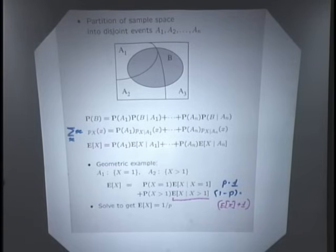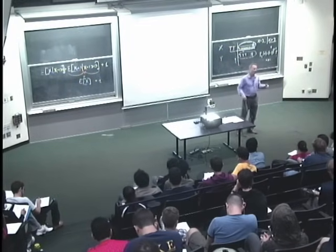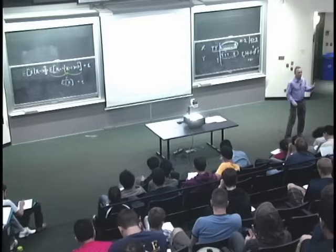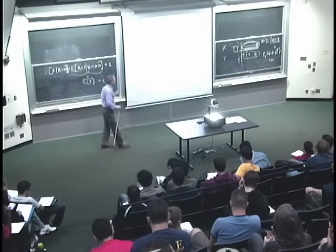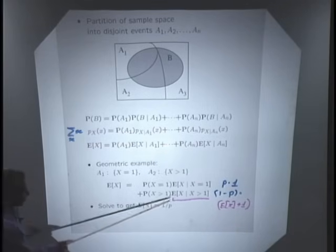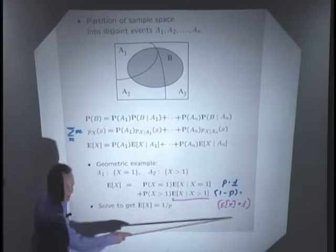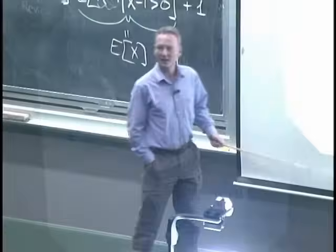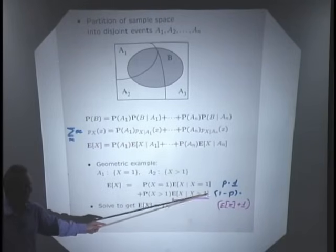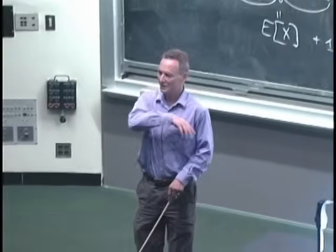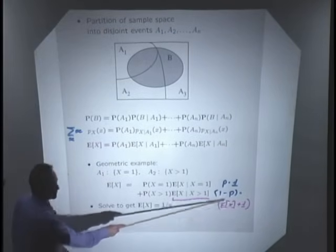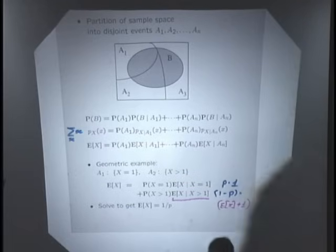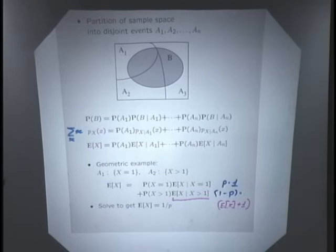The answer E[X] = 1/p makes intuitive sense: if p is small, heads are hard to get, so you expect to wait a long time. The divide-and-conquer trick is very powerful here. The key insight is that if I tell you the first coin flip was tails, all that means is that person wasted one coin flip and starts all over again — the remaining flips until the first head have the same distribution as starting fresh.